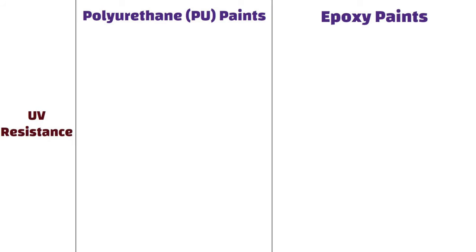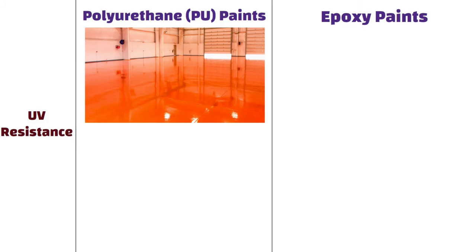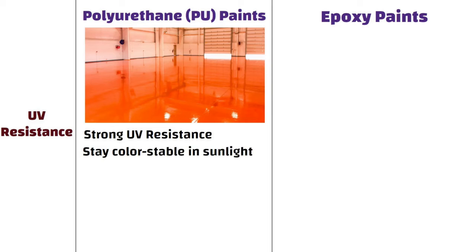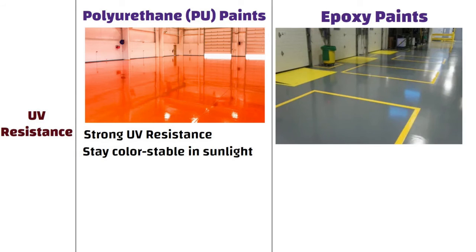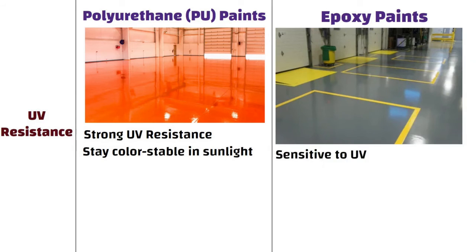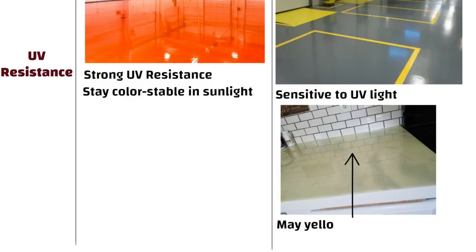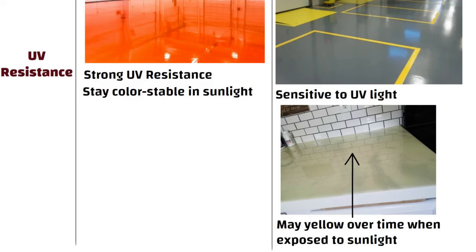UV resistance. Polyurethanes have strong UV resistance and unlike epoxy, they stay color-stable in sunlight, avoiding yellowing. In contrast, epoxy coatings are sensitive to UV light and may amber or yellow over time when exposed to sunlight.